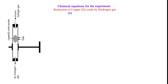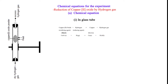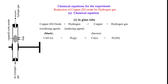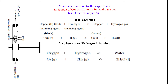A. Chemical equation. 1. In glass tube: copper(II) oxide plus hydrogen to copper plus water. 2. When excess hydrogen is burning: oxygen plus hydrogen to water.